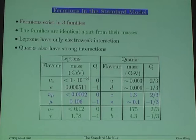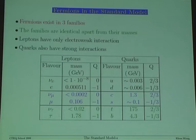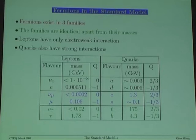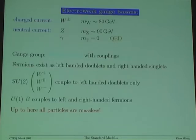Fermions exist in three families, and these families are identical apart from their masses. Leptons only have electroweak interactions, and the quarks also have a strong interaction. We have the neutrino-electron with the up and down quark, the muon neutrino and muon with the charm and strange quark, and the tau neutrino and tau with the top and bottom quark. The interesting thing is the huge differences in masses — some six orders of magnitude from the electron to the top quark — and we have absolutely no idea at the moment where this is coming from.